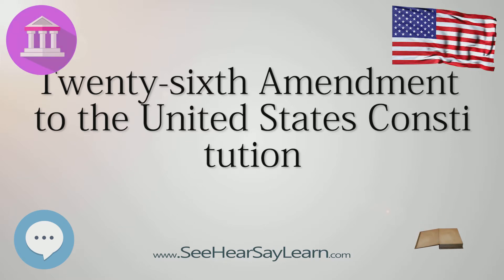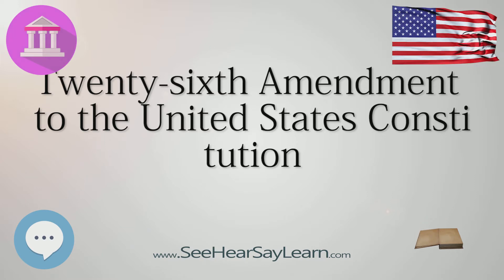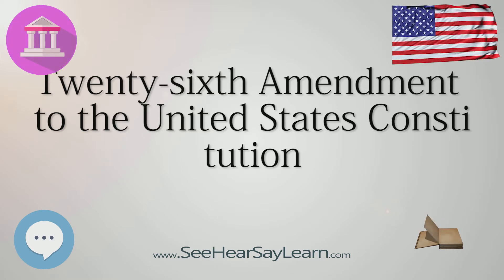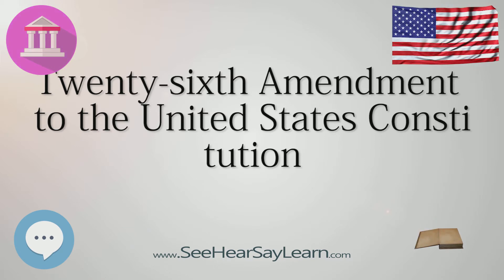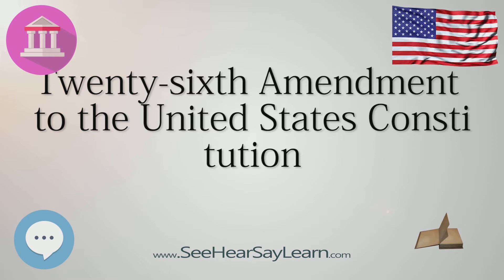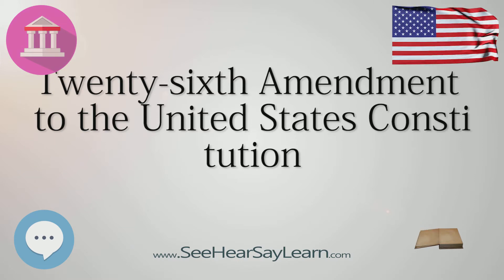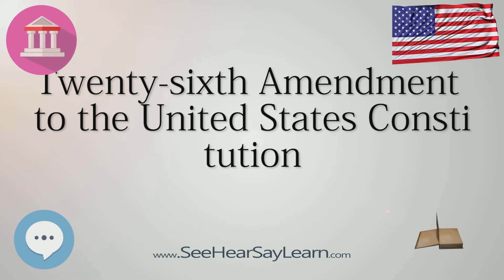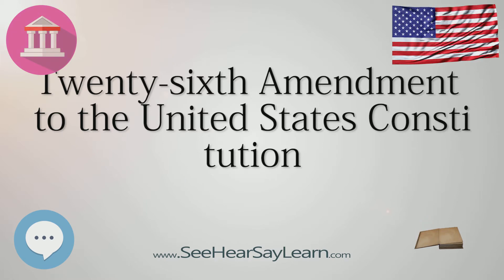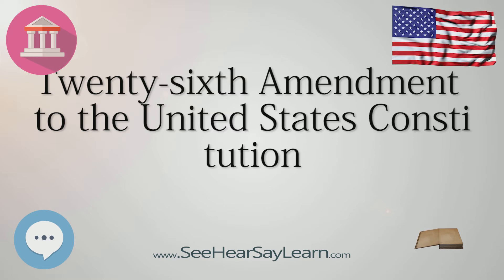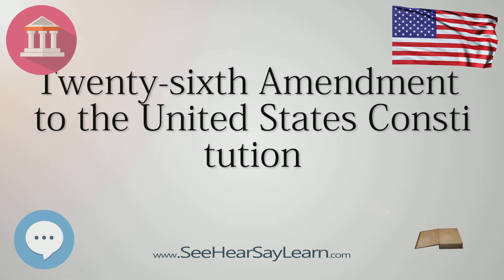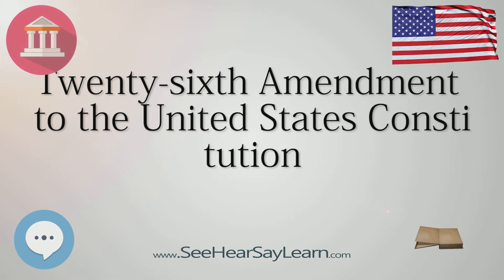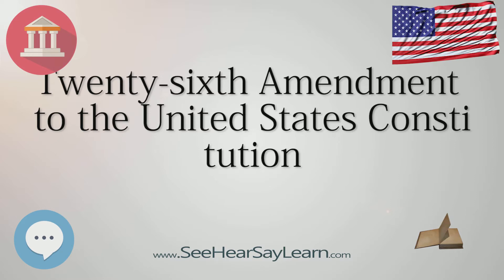By this time, four states had a minimum voting age below 21: Georgia, Kentucky, Alaska, and Hawaii. During debate of the 1970 extension of the Voting Rights Act, Senator Ted Kennedy argued that the Equal Protection Clause of the 14th Amendment allowed Congress to pass national legislation lowering the voting age. In the 1966 decision of Katzenbach v. Morgan, the Supreme Court had ruled that if Congress acts to enforce the 14th Amendment by passing a law declaring that a type of state law discriminates against a certain class of persons, the Supreme Court will let the law stand if the justices can perceive a basis for Congress's actions.